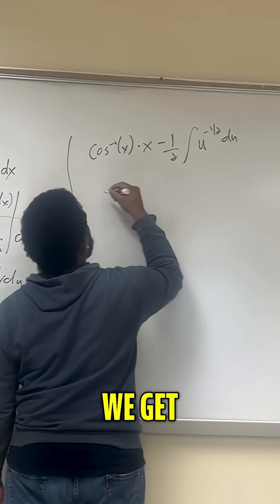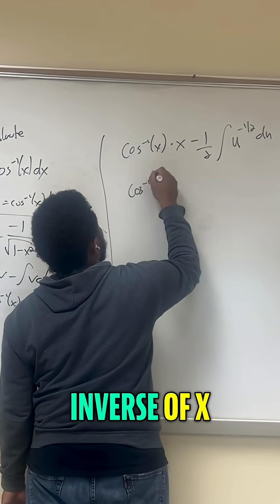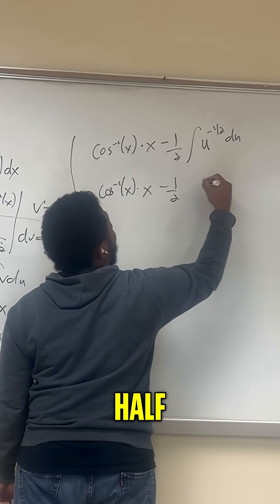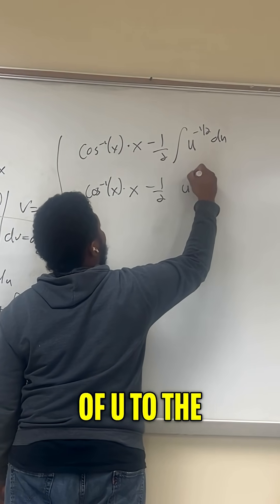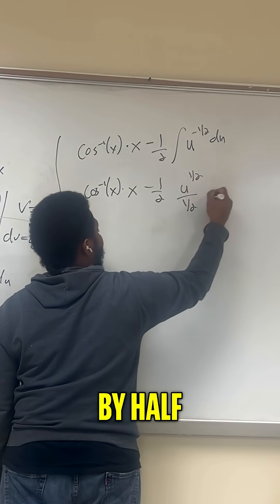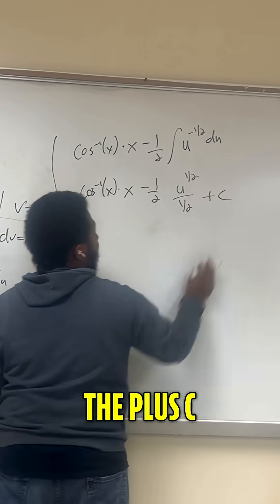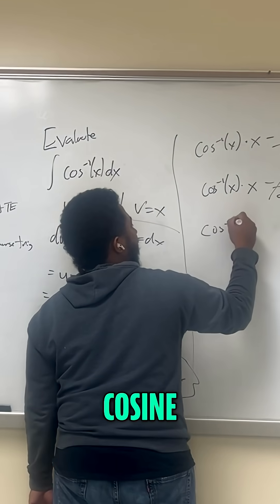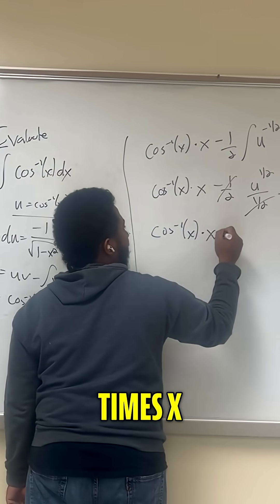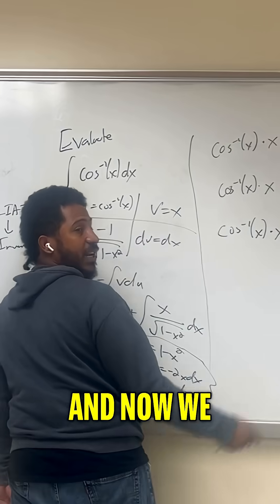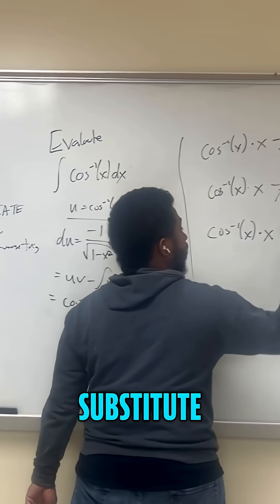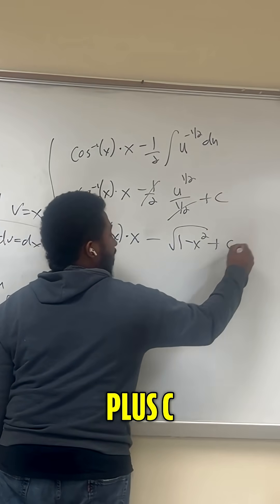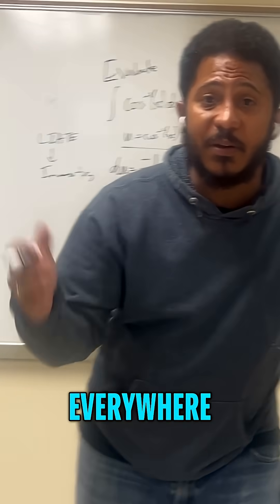Using our power rule, we get cosine inverse of x times x, minus half of u to the half divided by half — don't forget the plus C. These halves end up canceling, so we get cosine inverse of x times x minus, and now we back substitute, the square root of 1 minus x squared, plus C. Always remember, math is everywhere.